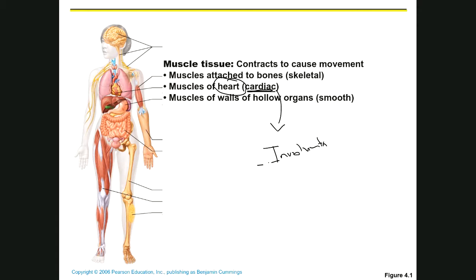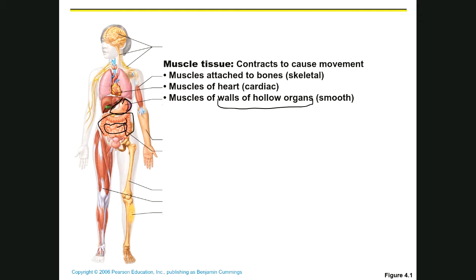Smooth muscle is found in the walls of hollow organs — places like the stomach, the intestines, the bladder, the uterus, and places like that. It is also involuntary. So those are the three different types of muscle.